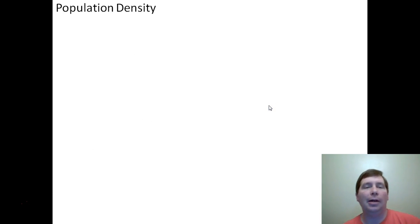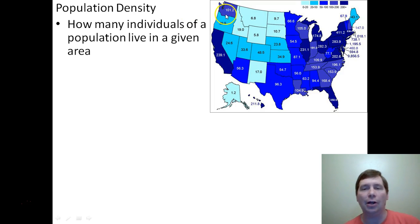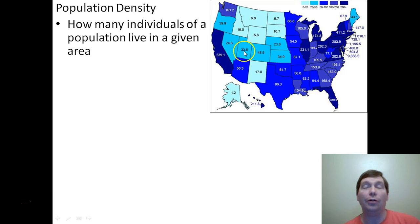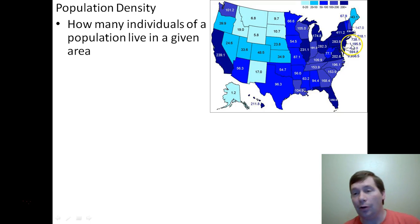Next, let's talk about population density. Density is a measurement of how much of something is in a space. Population density is how many individuals of a population live in a given area. This picture shows you the population density of the United States for humans — each number shows how many people live in one square mile in that state. Utah has 33.6 people per square mile. Wyoming has 5.8 people per square mile. California has 239.1, and New Jersey has 1,195 people per square mile.